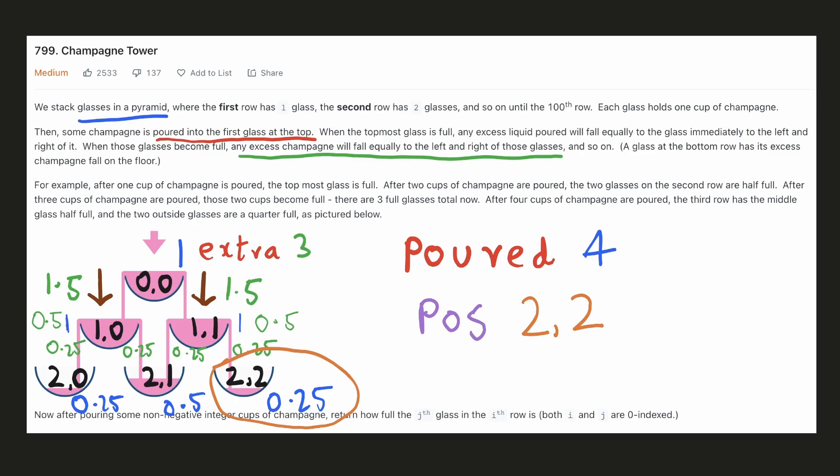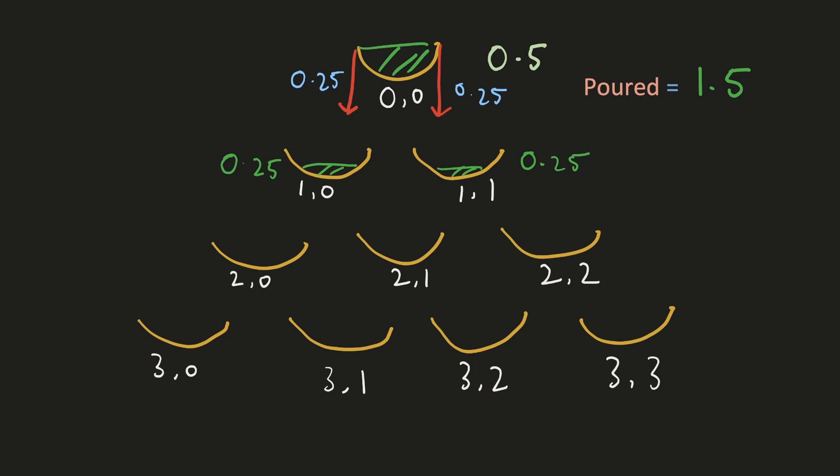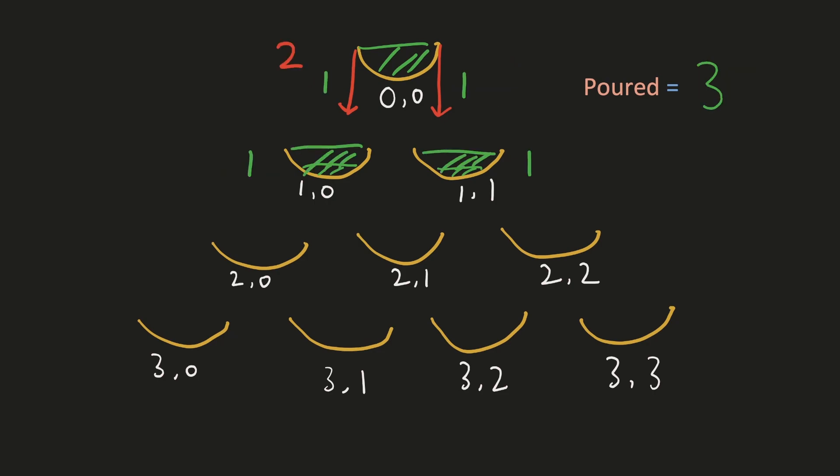Let's identify some patterns using simple examples. If we pour 0.5 units, the top glass will be half filled with no spillage. If we pour 1 unit, it will be completely filled with no spillage. When we pour more than 1 unit into a glass, half of that extra amount spills from both sides and is collected by the two lower glasses. When we pour 3 units, the lower glasses are completely filled but receive no more than 1 unit, so there is no spillage from them.